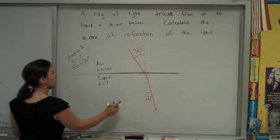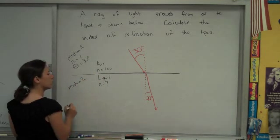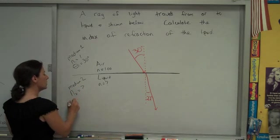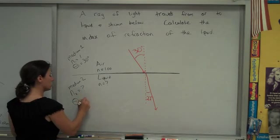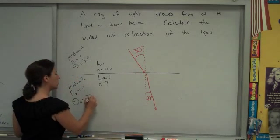And then over here for medium 2, which is the liquid, we actually don't know what the n value is, but we do know what the angle of refraction is, meaning the angle between the refractive ray and the normal line, and that's 22 degrees.